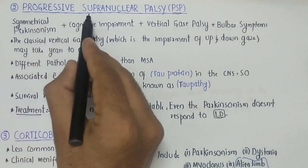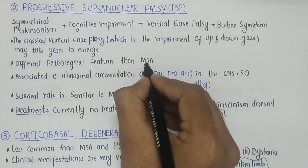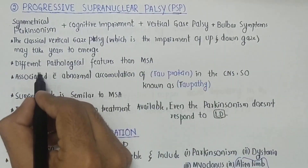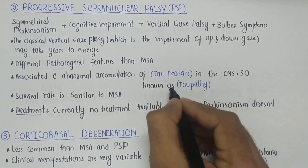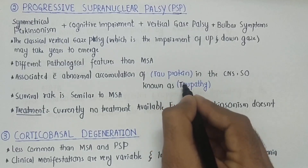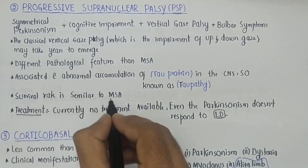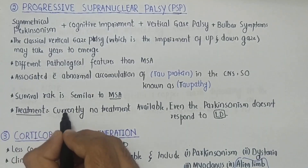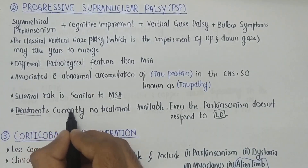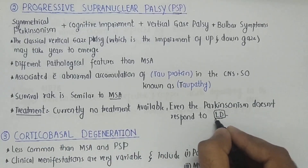Progressive supranuclear palsy has different pathological features from multiple system atrophy. It is associated with abnormal accumulation of tau protein in the central nervous system — it is a tauopathy, not a synucleinopathy. The survival rate is similar to multiple system atrophy, and there is currently no treatment available for PSP; even the Parkinsonism does not respond to levodopa.